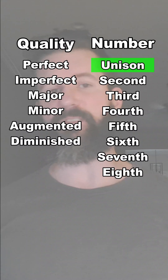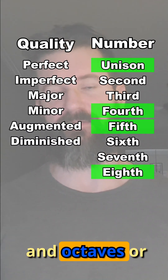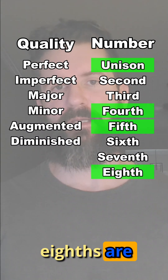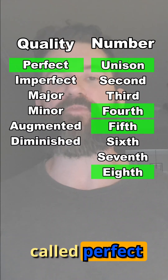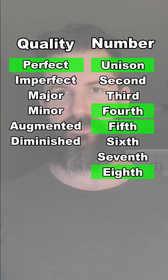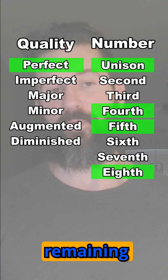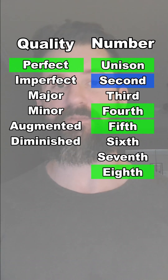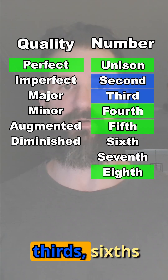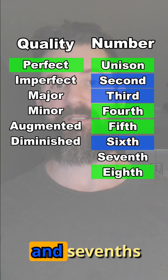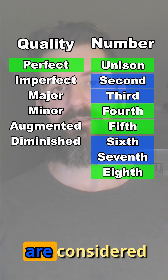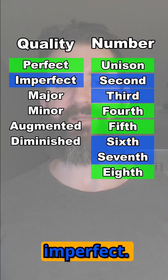Unisons, fourths, fifths, and octaves or eighths are called perfect intervals, and the remaining intervals — seconds, thirds, sixths, and sevenths — are considered imperfect.